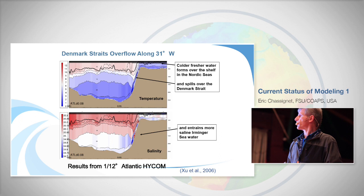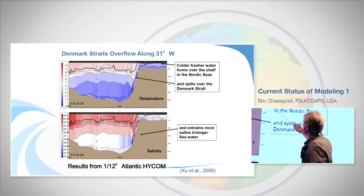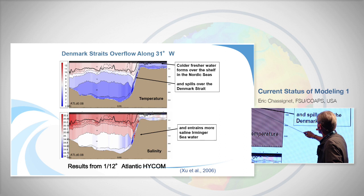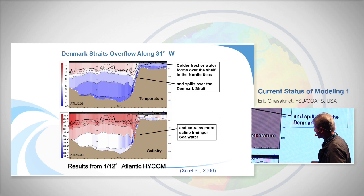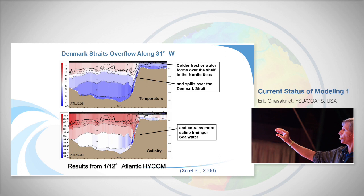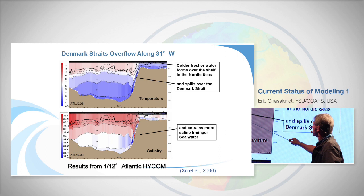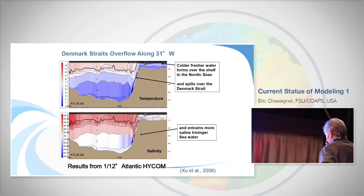Here is an example of an isopycnic-based hybrid model. In this case you have Z-coordinates at the top and isopycnal layers below. You have cold, fresh water falling down the slope, and as it falls it can entrain saltier water. The water masses falling down the slope are well separated, and you can entrain some of the salinity into them.